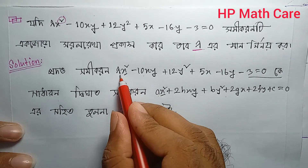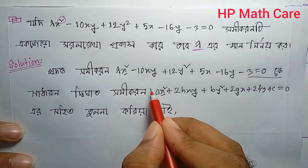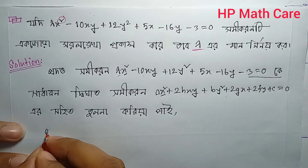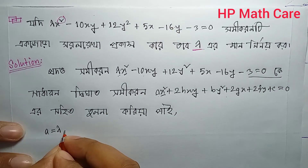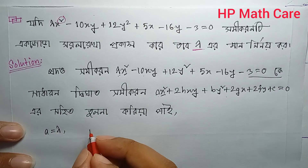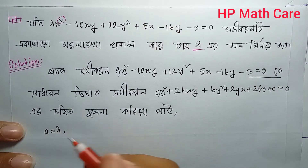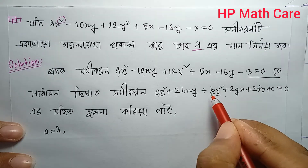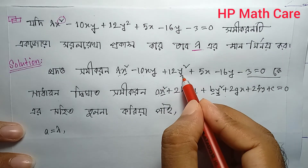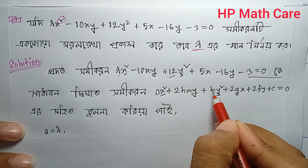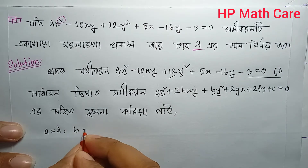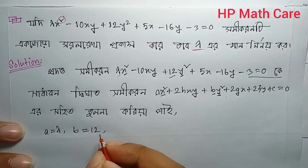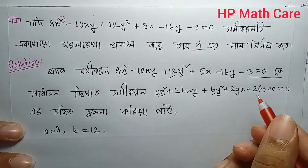So comparing coefficients: b (coefficient of y²) = 12. The coefficient of 2xy gives us the h term. We identify all values from the general second-degree equation.